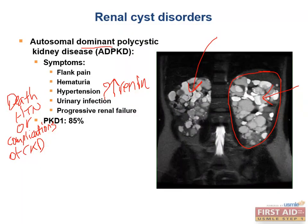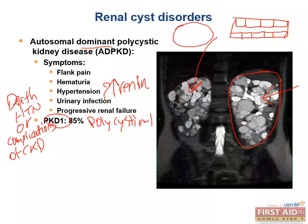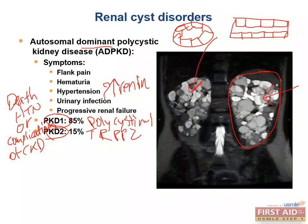85% of cases result from a mutation in PKD1, which codes for a protein called polycystin-1 — an integral membrane protein involved in cell-to-cell and cell-to-matrix interactions of the renal tubules. A mutation in this protein causes cells to proliferate in a disorganized fashion and form renal cysts rather than tubular structures. 15% of cases are caused by PKD2, which codes for TRPP2, and the pathophysiology is similar because TRPP2 and polycystin-1 are part of the same pathway.